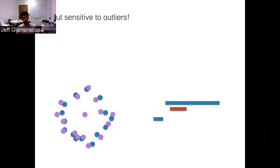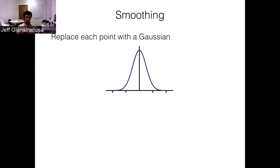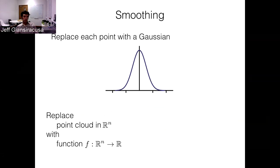In many applications you have to deal with outliers, but there's an easy way to handle this: you smooth your data set. We replace each point with a little Gaussian bump function around it, which has the effect of smoothing things out. Now what we're doing is replacing our point cloud in R^n with a smooth positive real-valued function. Instead of doing the expanding-balls Vietoris-Rips complex construction, we do a Morse filtration on the level sets of this function — we define a sequence of spaces given by the downward level sets, the preimage of the interval from negative infinity up to some level T.